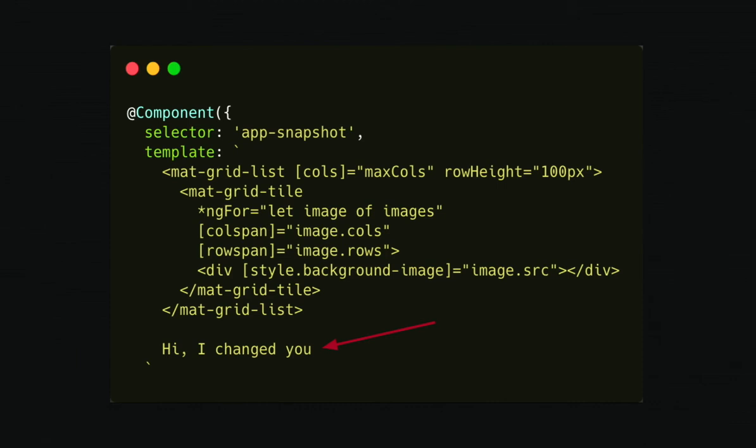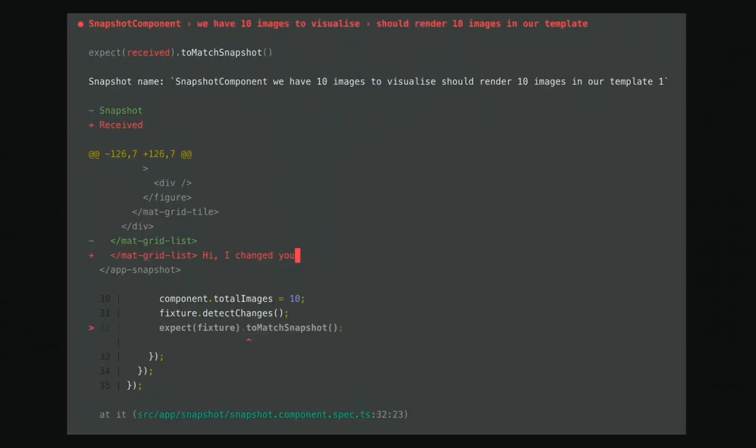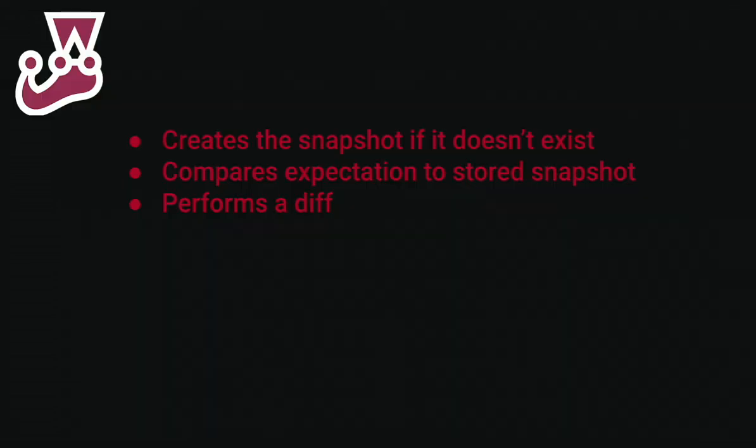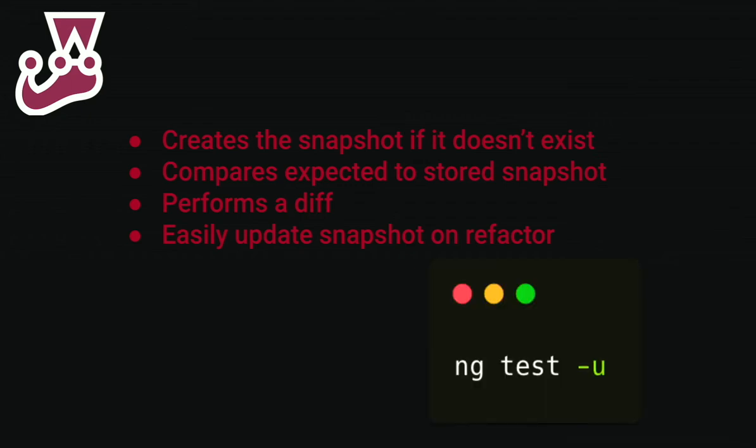And now I want to change something. So I have my generated snapshot file. So I change something, I rerun my test, and then I get some nice representation that's readable. If you have such a representation in Jasmine, it's not so readable. I see exactly on which line the grid list has been changed to how I changed you. So nice feedback. So what we already learned about Jest, it creates the snapshot if it doesn't exist. It compares the expectation to the stored snapshot, and it performs a nice difference between both snapshots. But now I've changed something, and that's really the truth because I needed to change my component. You can just easily update the snapshot when you did a refactor of your code, which is ng-test-u. Minus-u stands for update tests.